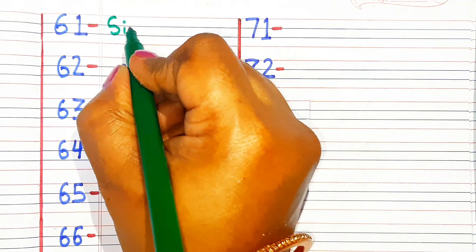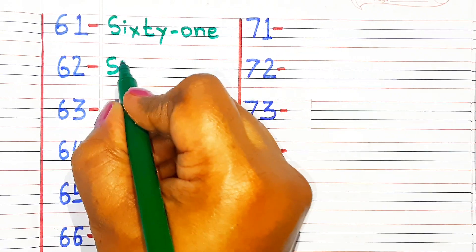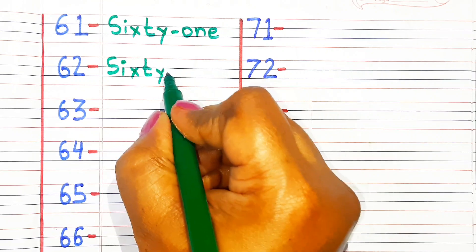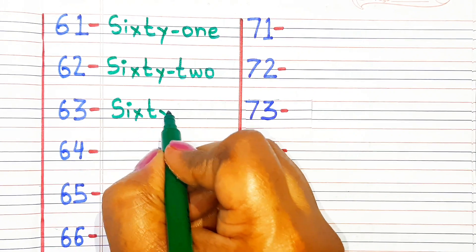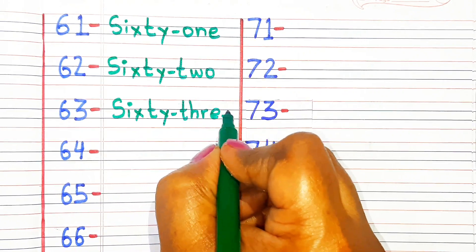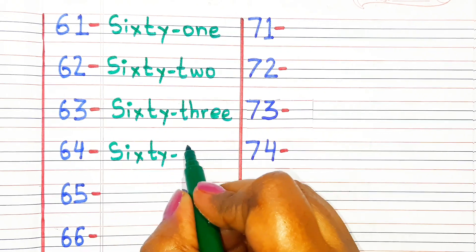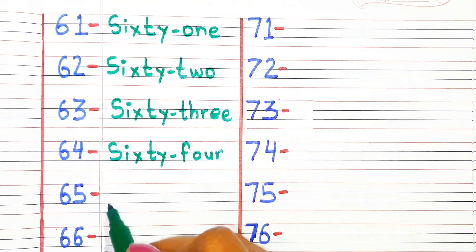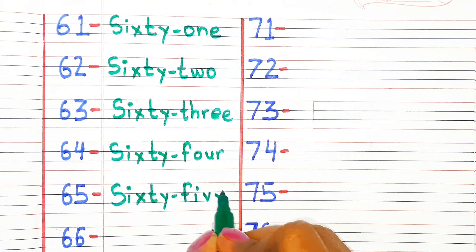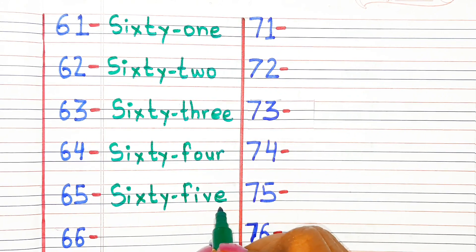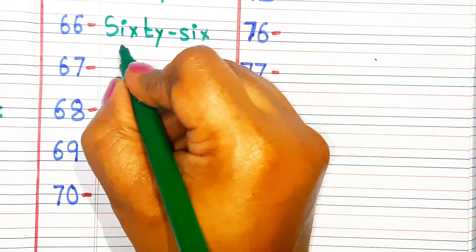S-I-X-T-Y-O-N-E 61. S-I-X-T-Y-T-W-O 62. S-I-X-T-Y-T-H-R-E-E 63. S-I-X-T-Y-F-O-U-R 64. S-I-X-T-Y-F-I-V-E 65. S-I-X-T-Y-S-I-X 66.